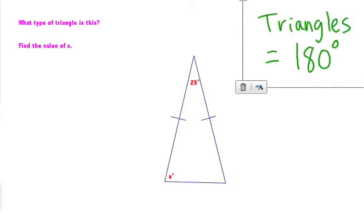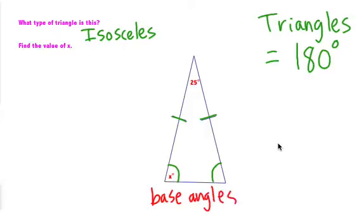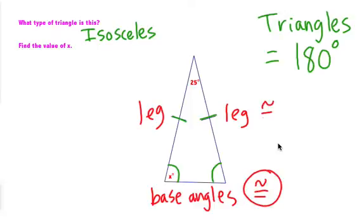Let's look at this — what type of triangle is it? Notice these little hash marks here. That means those two sides are equal, which means it's an isosceles triangle. Not only are two of the sides equal on an isosceles, but these two base angles are also congruent. These are called the base angles — they're at the bottom of the legs. The legs are the sides that are congruent to each other, and the base angles are congruent just like the legs are.